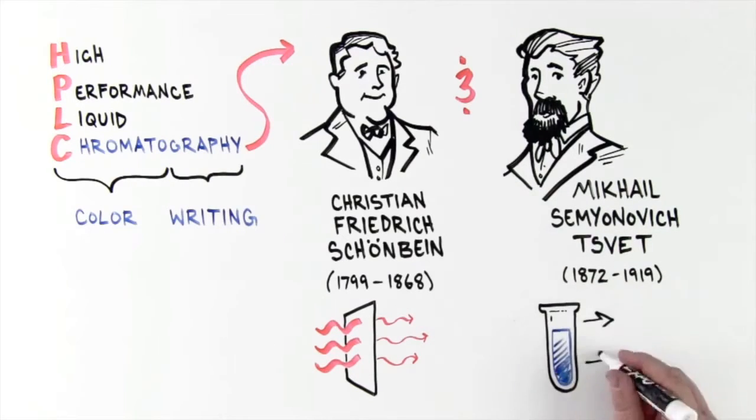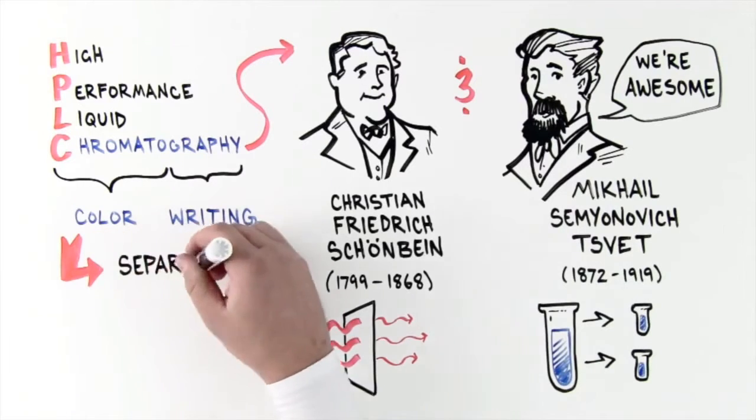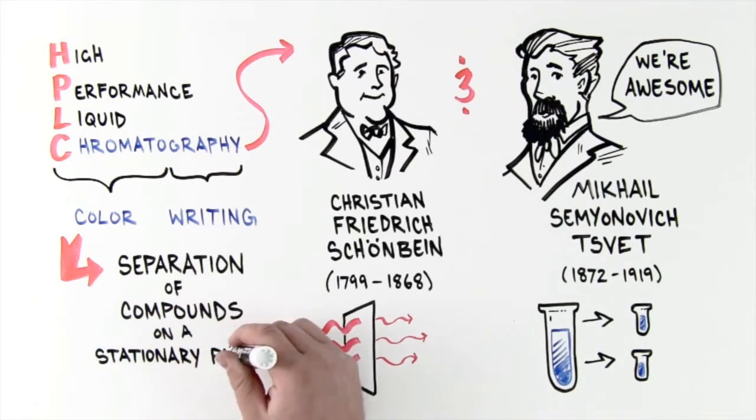Svet separated plant pigments in calcium carbonate columns. High-performance liquid chromatography is the separation of compounds on a stationary phase column.